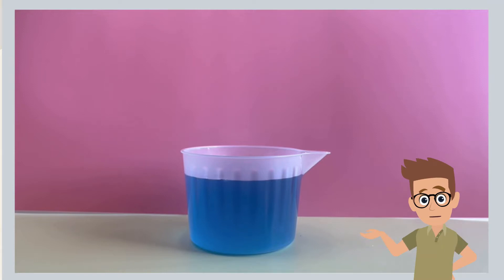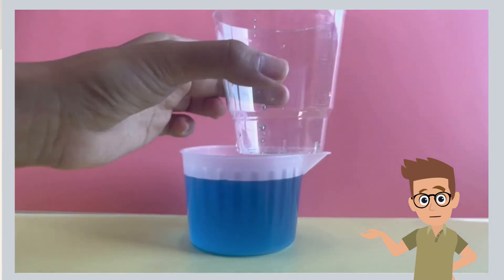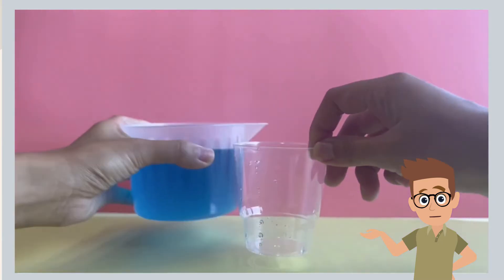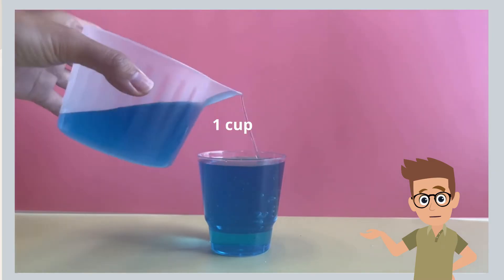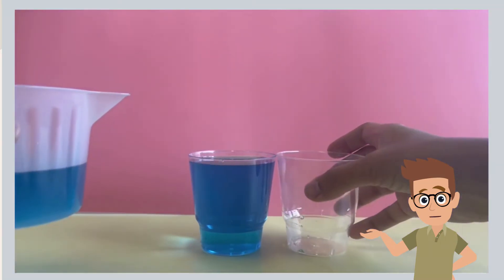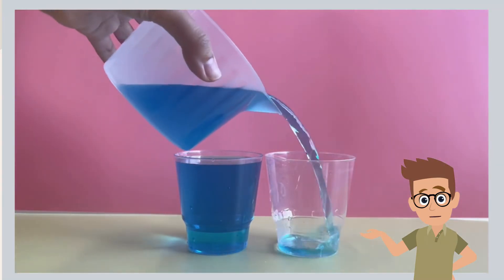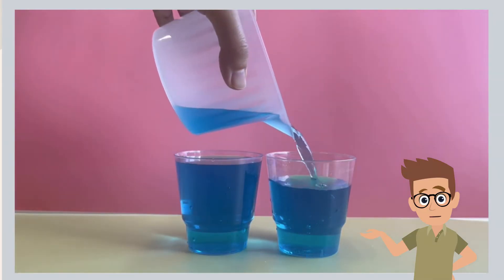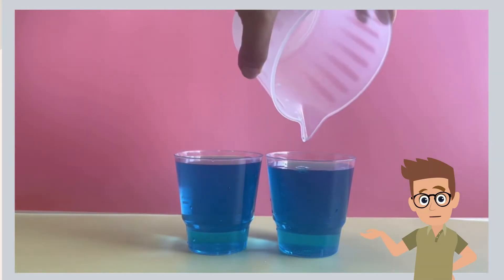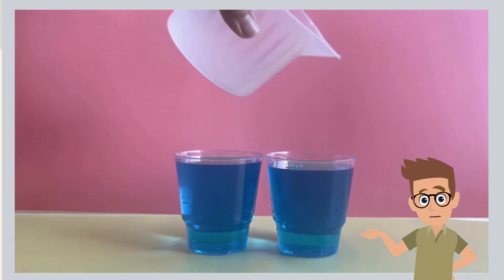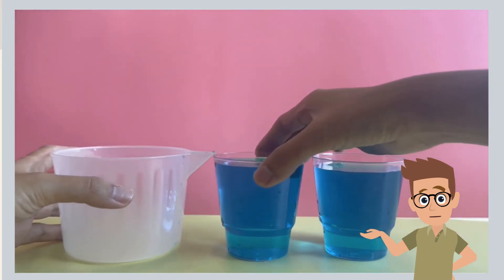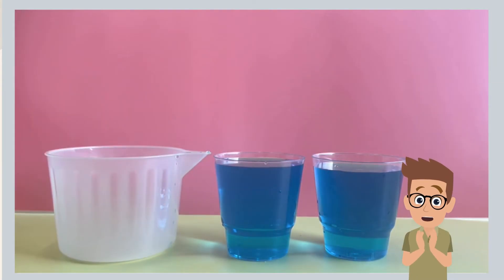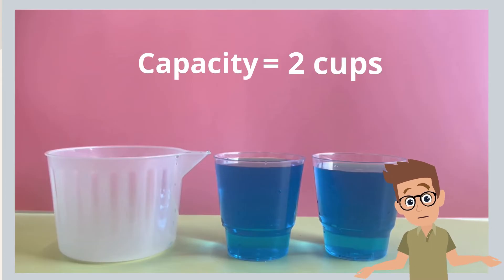Now, let's find the capacity of the container by pouring the liquid into cups. The liquid fills up one cup and another cup. So, we say that the capacity of the container is two cups.